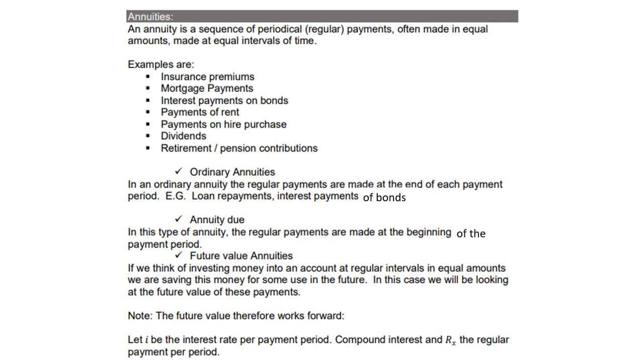Annuity due. In this type of annuity, the regular payments are made at the beginning of each payment period. Future value annuities: if we think of investing money into an account at regular intervals in equal amounts, we are saving this money for some use in future. In this case, we will be looking at the future value of these payments.